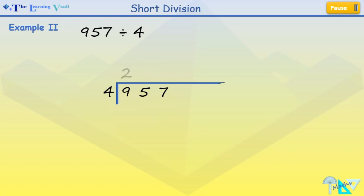9 divided by 4 is 2. We've got a remainder 1. We carry the 1 to the 5 to make this 15. Now, 15 divided by 4 is 3. And we've got a remainder of 3, which we carry onto the 7 to make this 37. Now, 37 divided by 4 is equal to 9. Remainder 1.